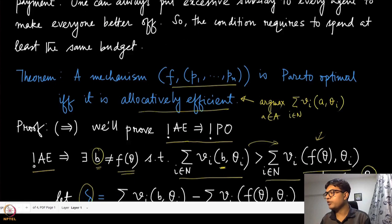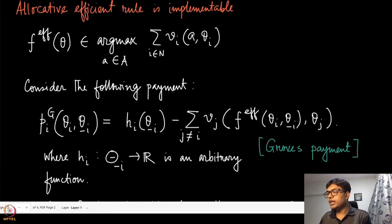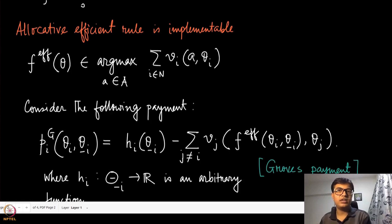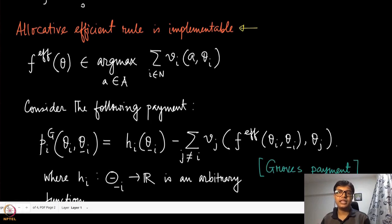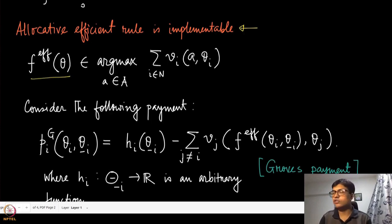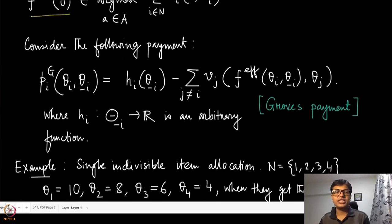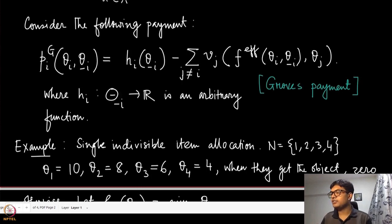So we have shown that in the quasilinear domain, Pareto-Efficiency or Pareto-Optimality is equivalent to allocative efficiency, and vice versa. Therefore we do not really have to worry about Pareto-Optimality separately; we can focus on allocative efficiency. Now, the allocatively efficient rule is actually implementable — meaning there exist payments that implement it in dominant strategies.